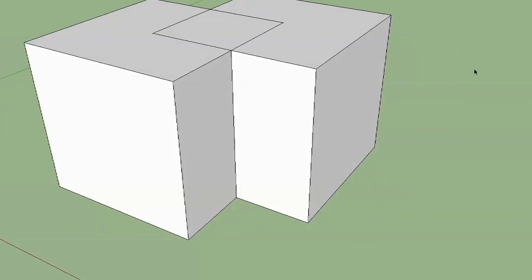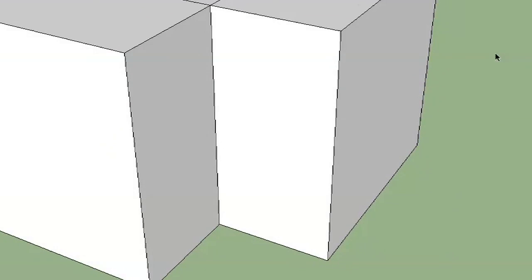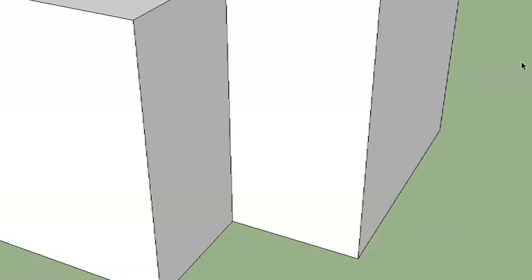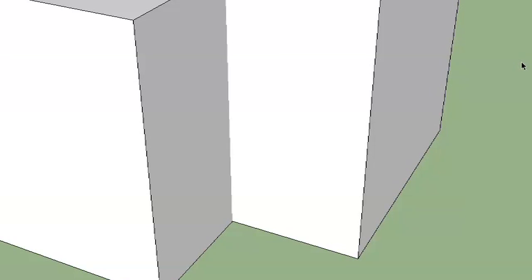Now, look at what happened there. It may not look like anything happened, but you'll notice that if we look at this seam right here — let me undo the intersect — you see that line? It's gone now. If I redo, there it is. That basically says, okay, these two faces are intersecting like this, let's go ahead and actually split them right there. So it actually draws a line for you right there.